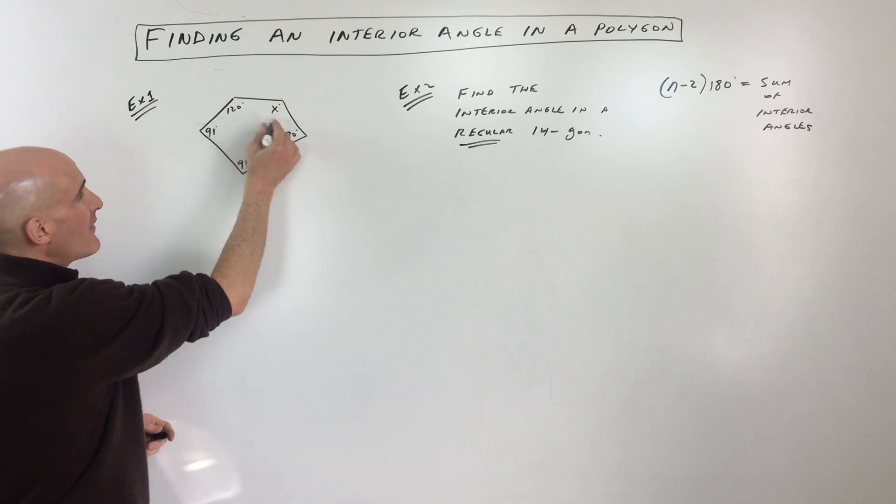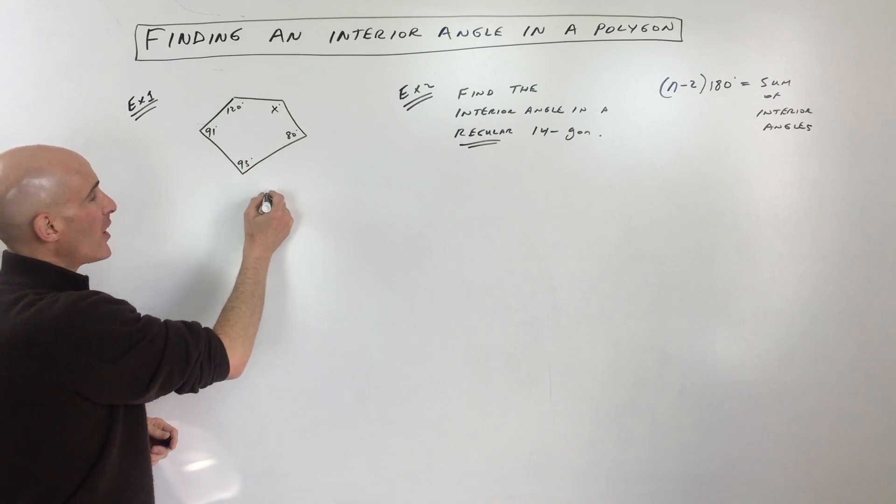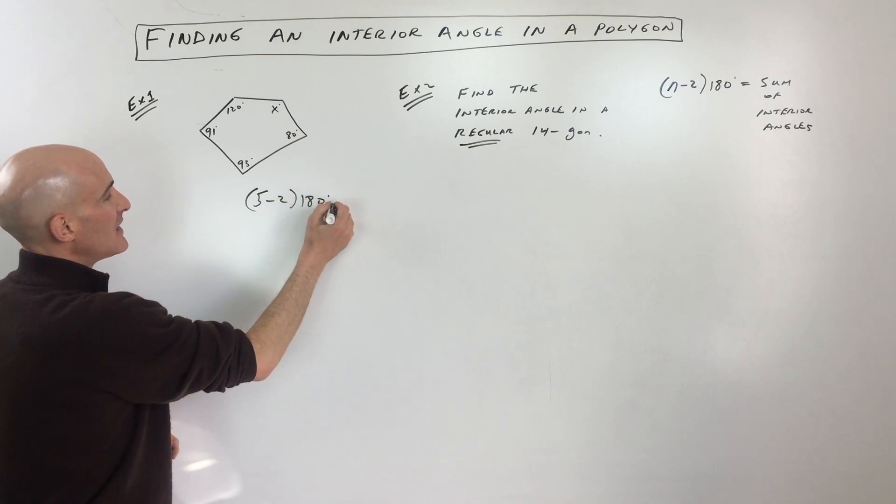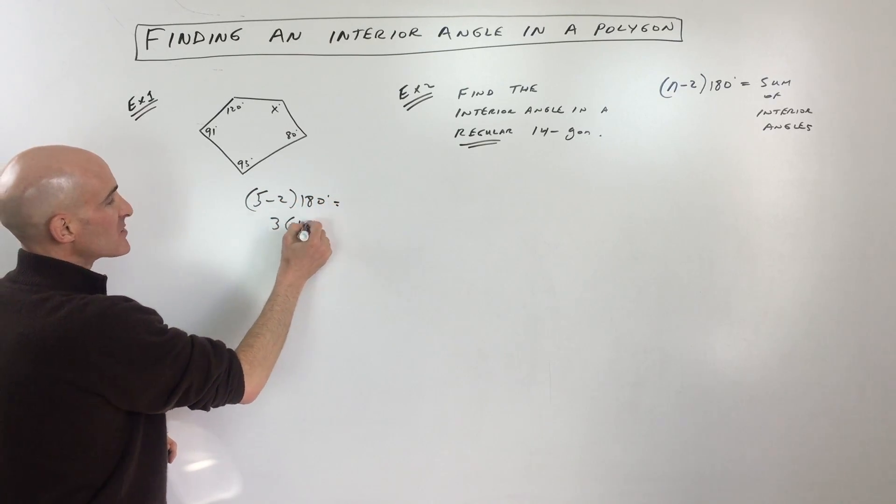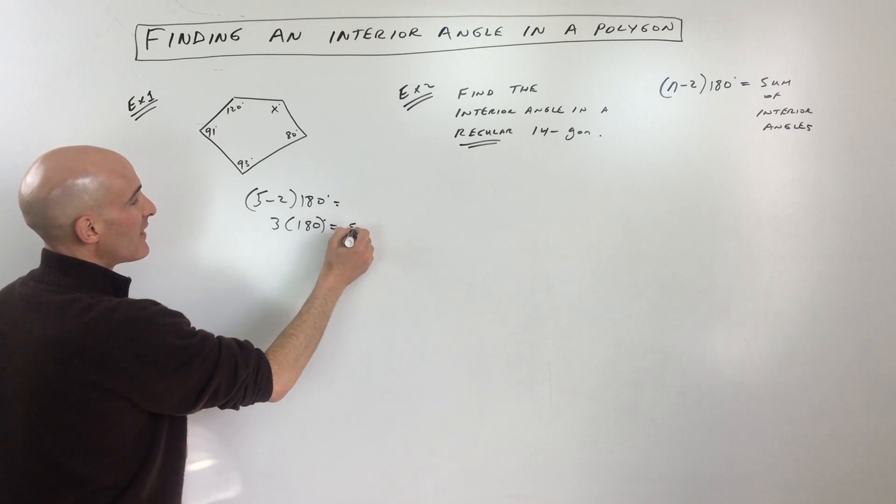So here you can see we've got 5 angles, or 5 sides, either one. 5 minus 2 times 180 equals what? Well, that's 3 times 180, which equals 540.